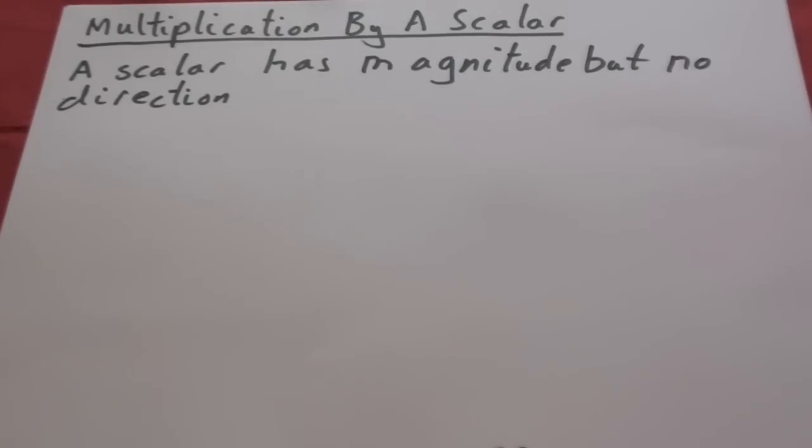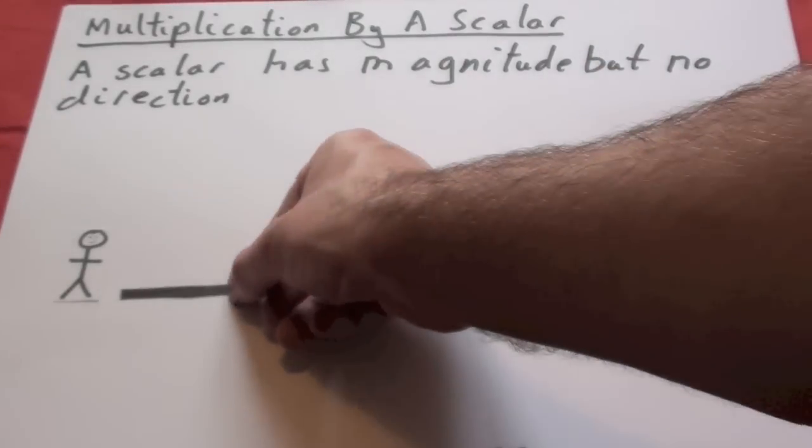Multiplication by a scalar. Now a scalar has magnitude but no direction. So it's size without direction.